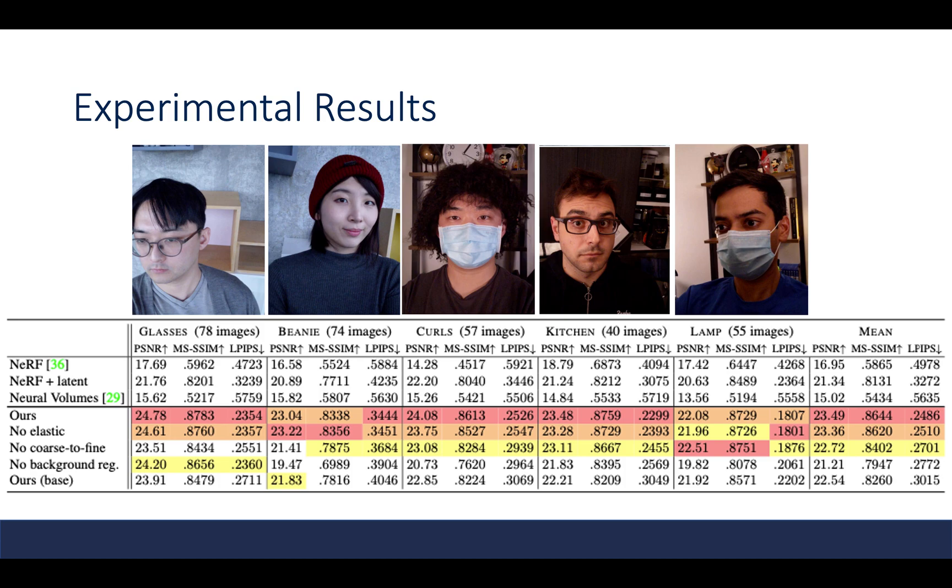Experimental results show that this paper compares favorably against NeRF and neural volumes across different scenes. In the second block, they disable one component at a time, showing the ablation results. The numbers show that each component contributes to the final performance, while disabling any of them suffers from performance loss.